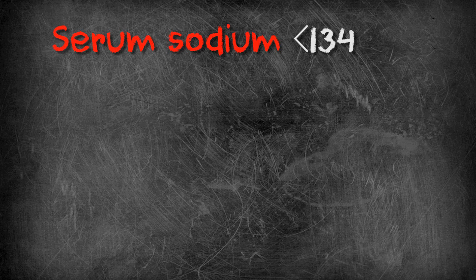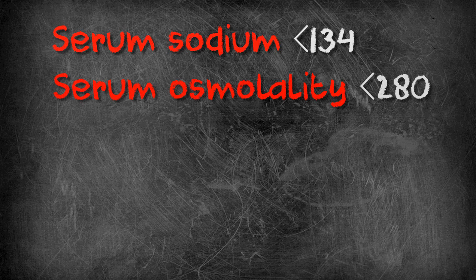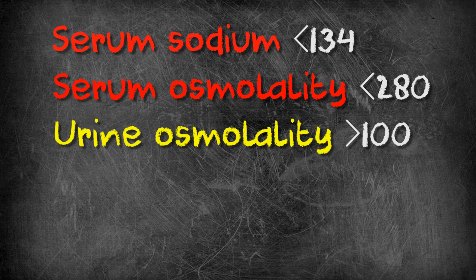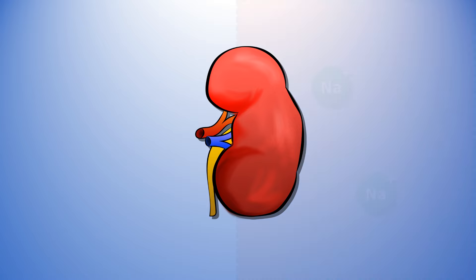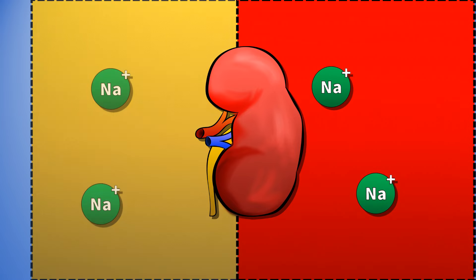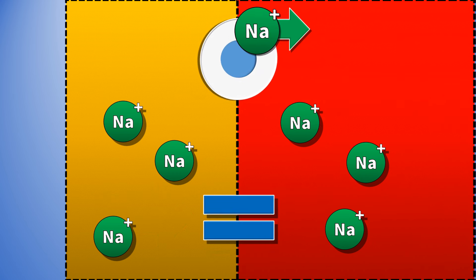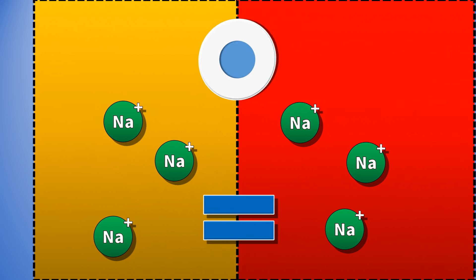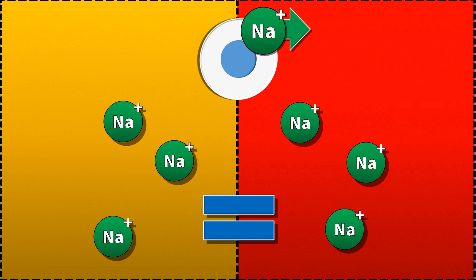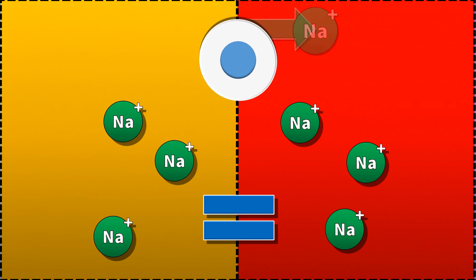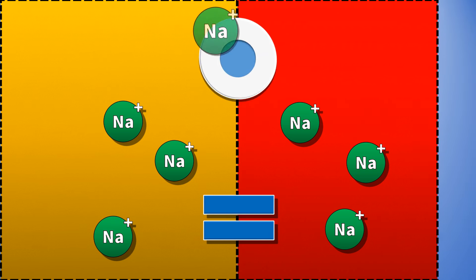To recap, you've got a patient with hyponatremia — low sodium — a low serum osmolality, suggesting this is a true hyponatremia, but high urine osmolality. Strange, isn't it? You'd expect if the blood is dilute for the urine to be dilute too, right? ADH and aldosterone should both fall, resulting in a diuresis — passage of large volumes of dilute urine with a low osmolality to return the blood to normal.